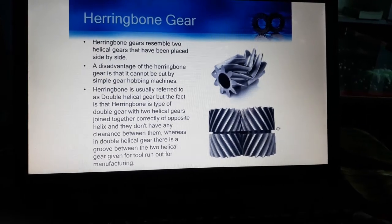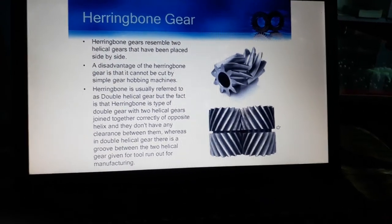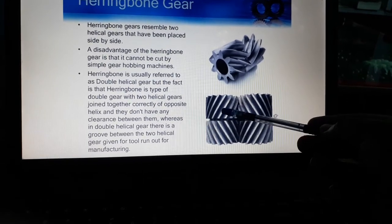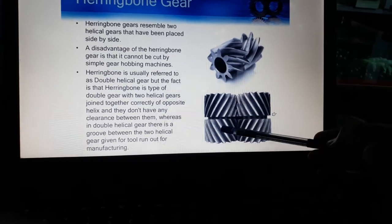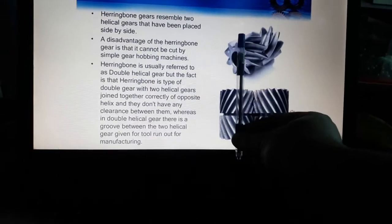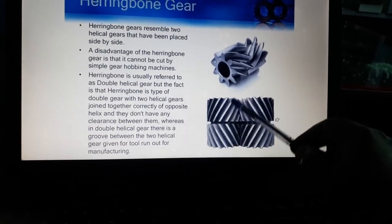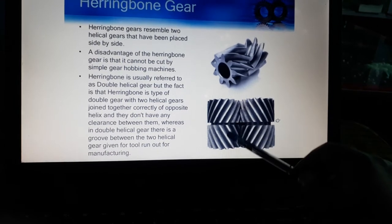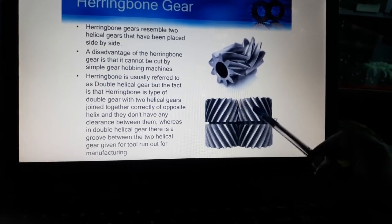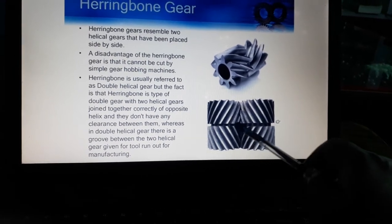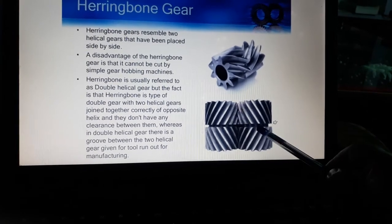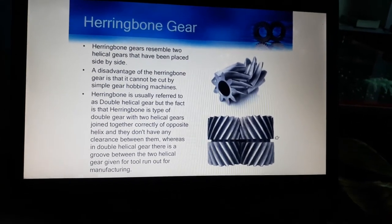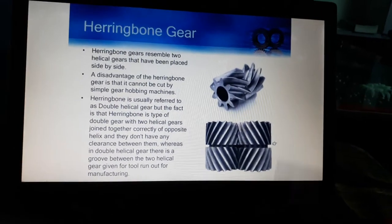Next is the herringbone gear. The main difference between herringbone gear and double helical gear is as follows: if your teeth are cut straight it will be a spur gear. If we combine two helical arrangements on a shaft and we cut the helix giving a groove between the two helixes — as you are seeing — then these are known as double helical gears. But if this groove is removed, then the arrangement of two helixes is known as herringbone gear.